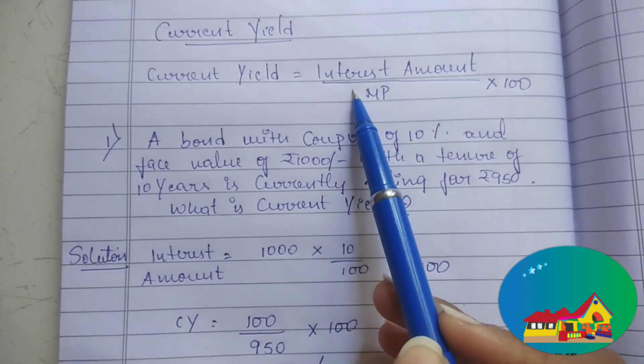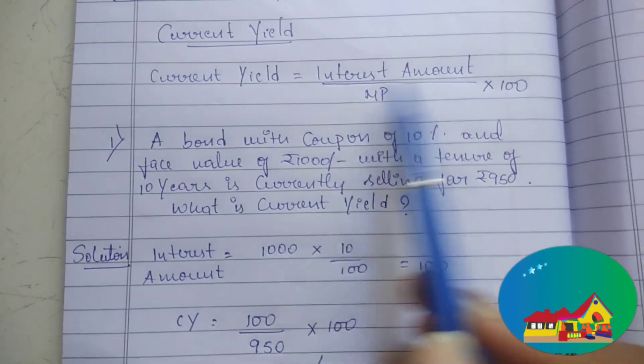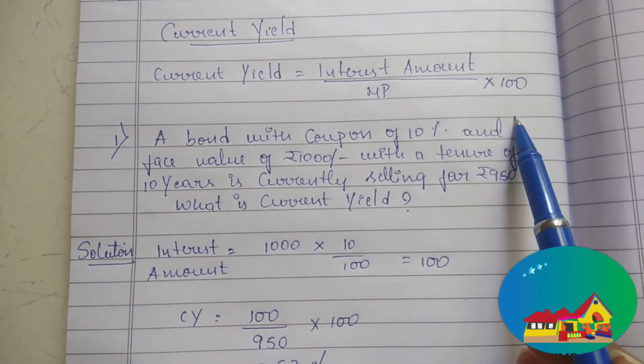First, let us look on current yield. It equals to interest amount divided by market price into 100. This is current yield formula.